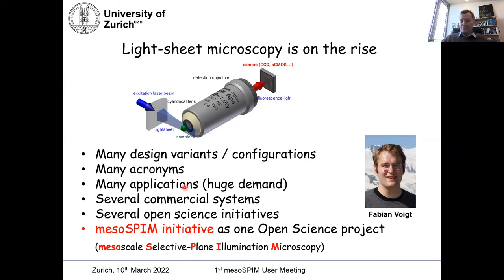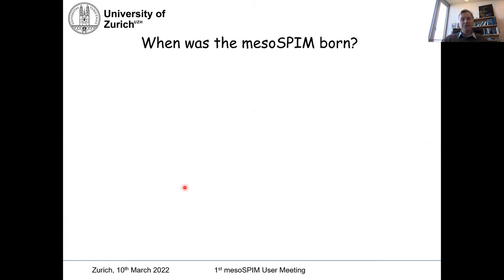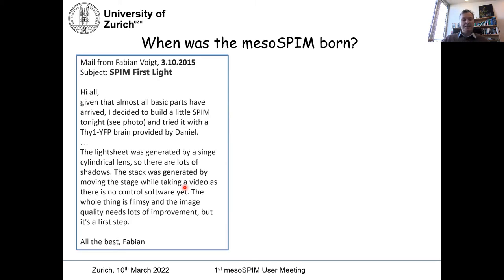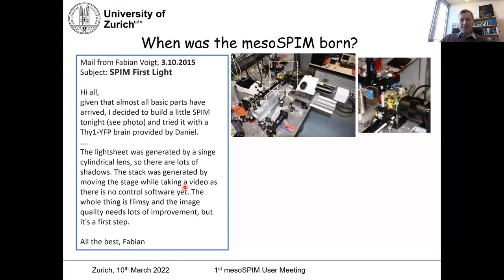Now, I thought I should answer the most pressing question at the beginning of the morning, which is: when was the Mesospim born? I can answer that because I pulled out the email from Fabian. I hope he's still asleep at Harvard University, because I didn't ask for his permission. This is Fabian's email from the 3rd of October, 2015: 'Spim First Light.' He writes, 'Hi all, almost all basic parts have arrived. I decided to build a little Spim tonight — see photo.' And he sent this photo, which actually shows the first Spim, the first Mesospim, if you like. You can see a Lewis Neumann's manipulator, the Hamamatsu camera, and just a cylindrical lens, and here the sample.